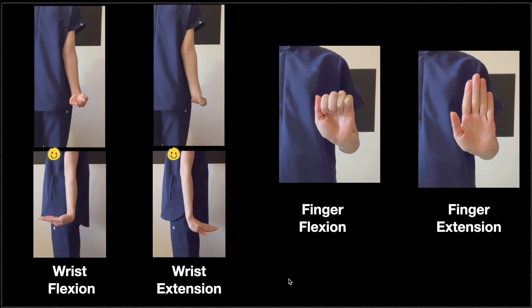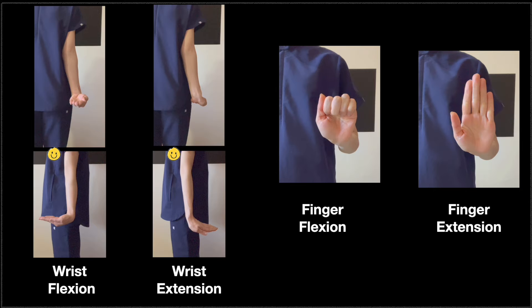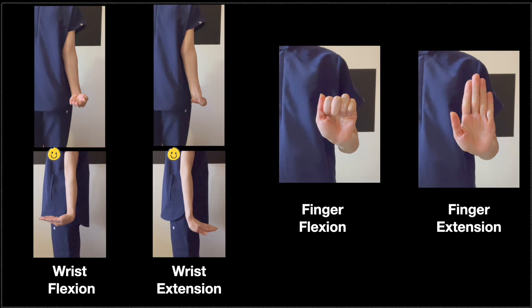Generally, when we say a joint is flexed, it means we're bending the joint, and when we say a joint is extended, it means we're releasing the flexion. For finger flexion and extension: we're bending the finger joints toward the palm for flexion, and opening the fingers — releasing the flexion — for extension.